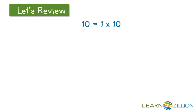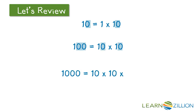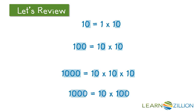Since 10 equals 1 times 10, multiplying by 10 is like multiplying a number by 10 one time. Since 100 is 10 times 10, multiplying by 100 is like multiplying a number by 10 twice. Since 1000 is 10 times 10 times 10, multiplying by 1000 is like multiplying a number by 10 three times. You can also multiply 10 times 100 to get to 1000.